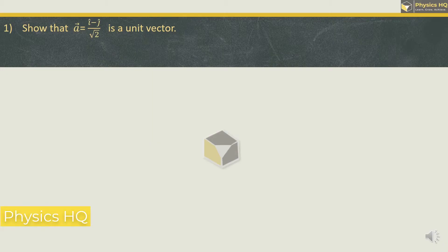Show that vector A = (i - j) / √2 is a unit vector. Now, what do you mean by a unit vector? A unit vector has magnitude equal to 1. So we will try to find out the magnitude of vector A. Vector A can be written as i/√2 minus j/√2.